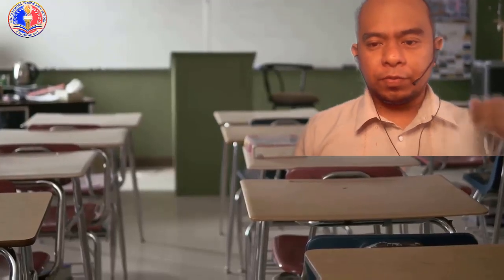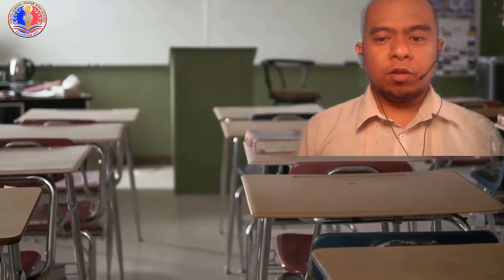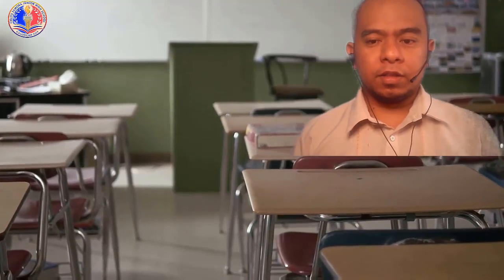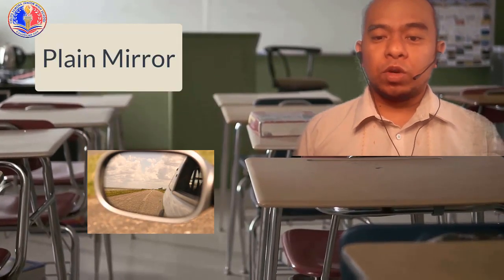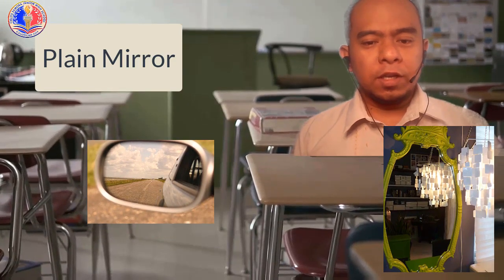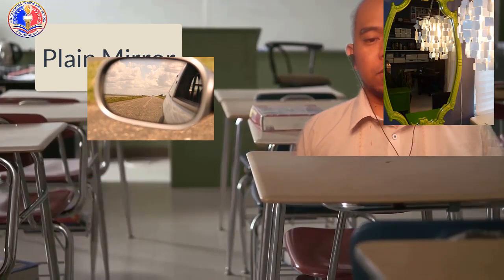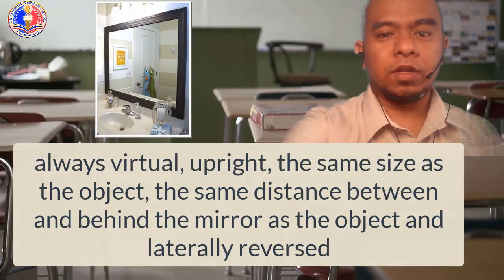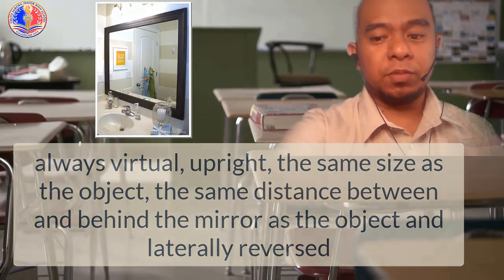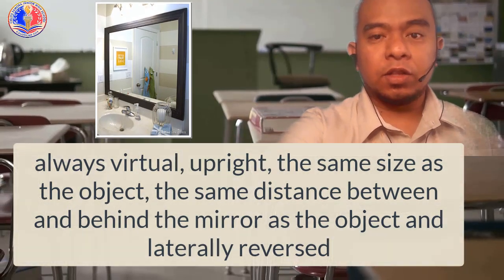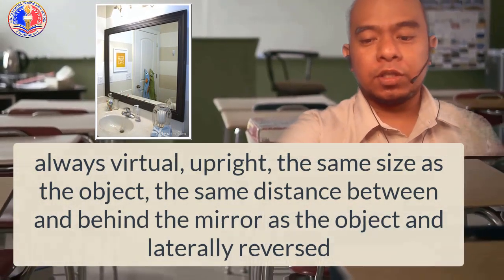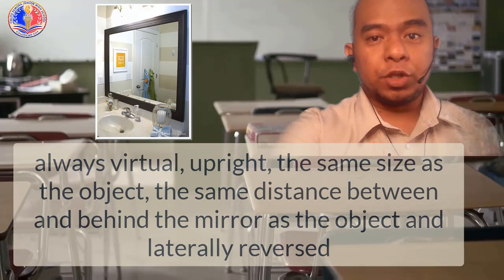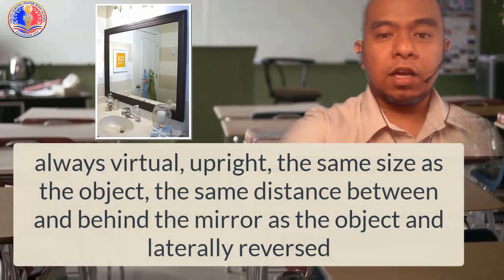Mirror is any surface that is smooth enough to produce regular reflection of light incident upon it. There are two types of mirror. Number one is the plane mirror, which has a flat surface. Usually, images formed in a plane mirror are always virtual, upright, and the same size as the object, the same distance between and behind the mirror as the object is in front of the mirror, and laterally reverse. When we say laterally reverse, it means that the left of the object becomes the right of the image and vice versa.